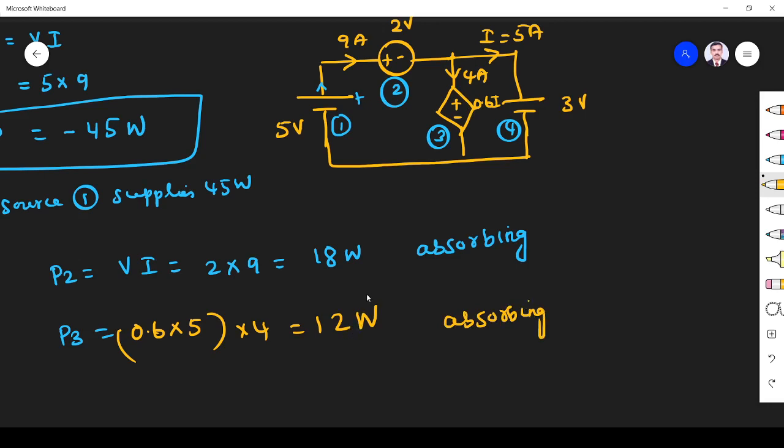Next, what about this fellow? Power supplied or absorbed by source 4. P4 is V into I. V is 3 volt. I enters through positive, so I is 5. So it is 15 watts. Since current enters through positive terminal, it is absorbing.